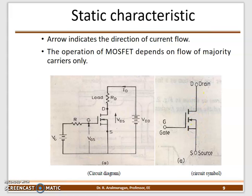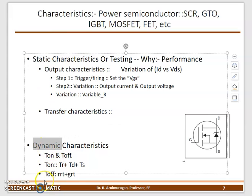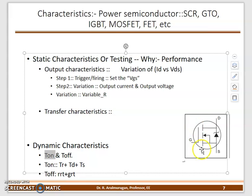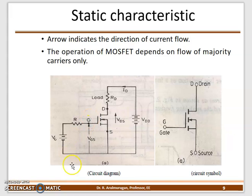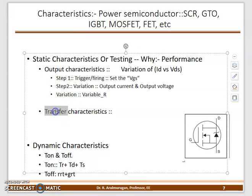There are two types of characteristics: static characteristics and dynamic characteristics. Dynamic characteristics describe the switching behavior — turning on and off. Static characteristics involve conducting a test on the device: applying triggering on the input side, connecting a load, and measuring with a voltmeter and ammeter to record readings. Static characteristics are further classified into output characteristics and transfer characteristics.